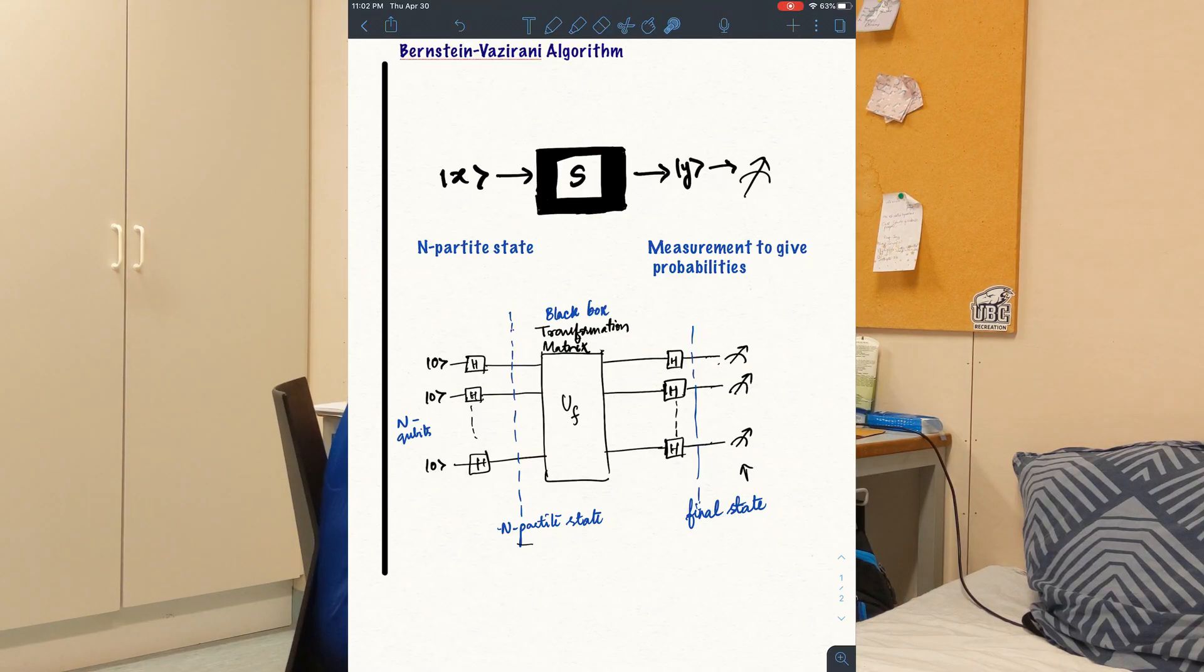Let's look at the Bernstein-Vazirani algorithm. Now, in this algorithm, we have an input state x that we provide to the black box and we let the black box change it to another state y on which we make our measurements to get our probabilities on what the value of s could be.